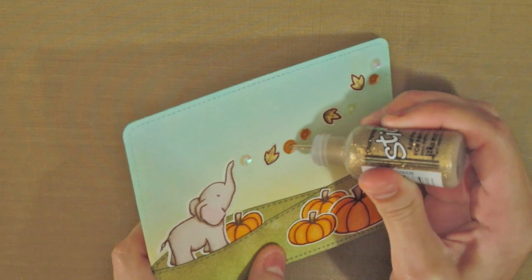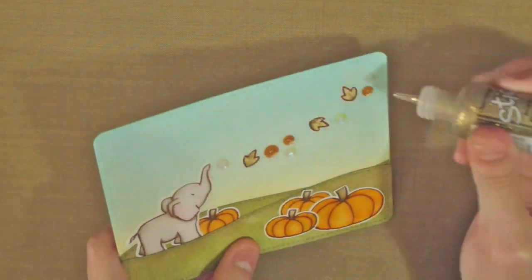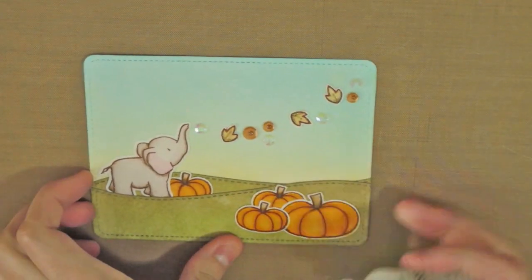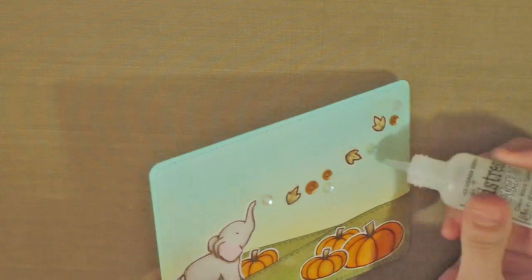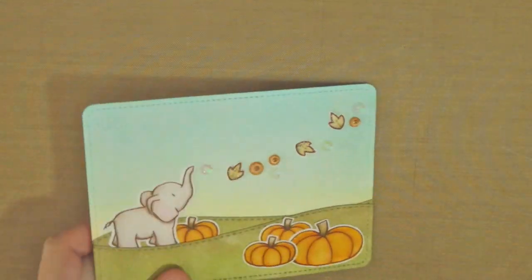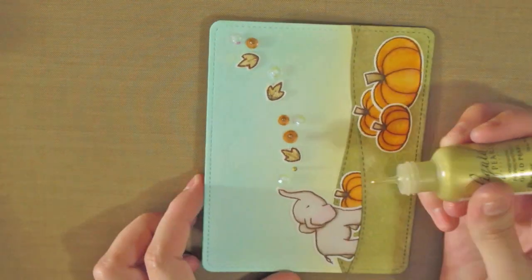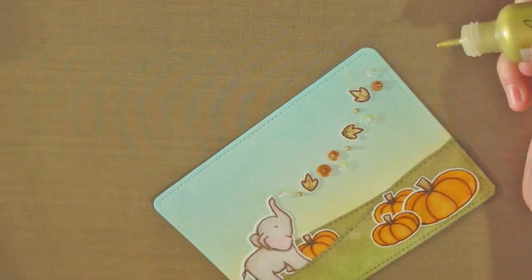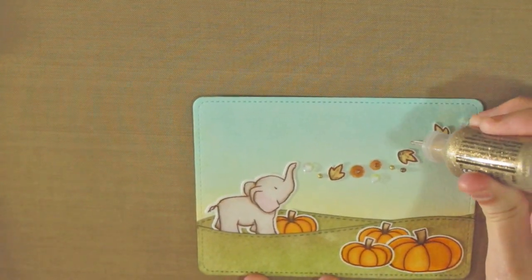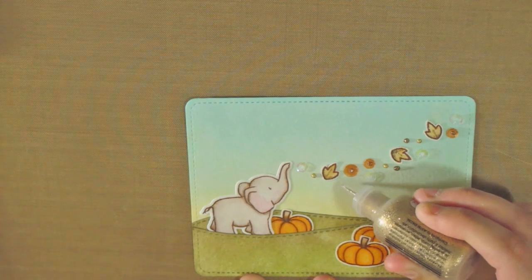Now, I am adding some stickles in champagne to the center of the orange sequins. For the clear sequins, I am using the clear rock candy distress stickles. Then I will add some liquid pearls in gold pearl among the sequins and leaves, as well as some stickles in the same champagne color, which is more like a bronzy brownish color.